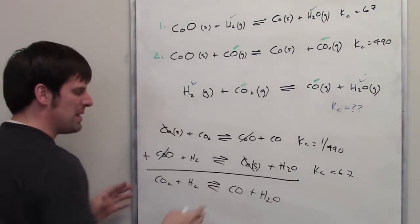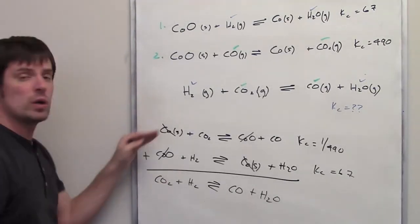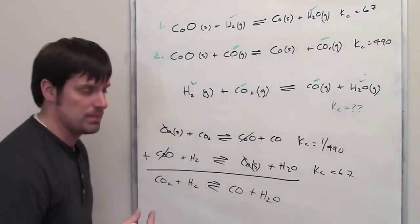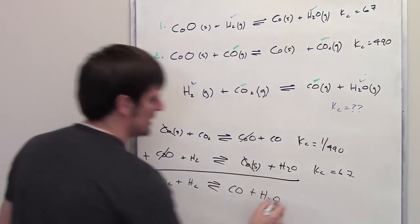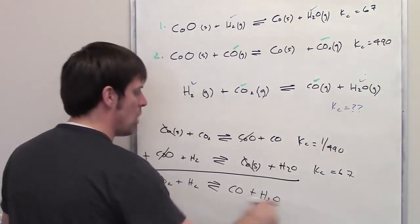So what's the overall Kc going to be for this? When you take two equations and you add them together, you have to multiply their individual Kc's in order to get a new Kc for the new overall equation.